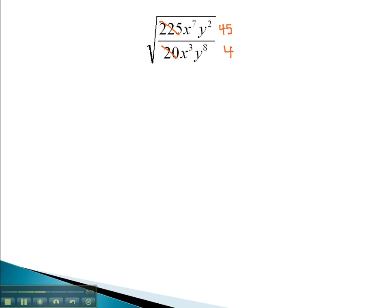On the variables, you may remember that we need to subtract exponents. x to the 7th over x to the 3rd is gonna be x to the 4th. When we subtract with the y's, 2 minus 8, we get negative 6. Because this is negative, we'll put the y to the 6th in the denominator.